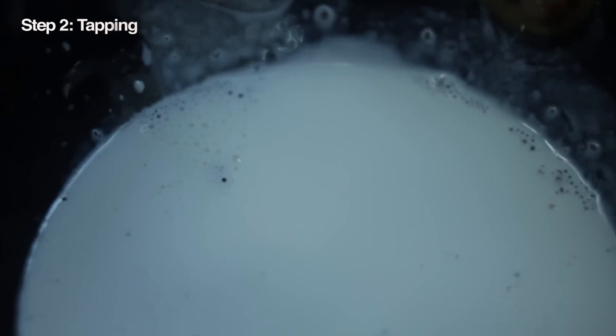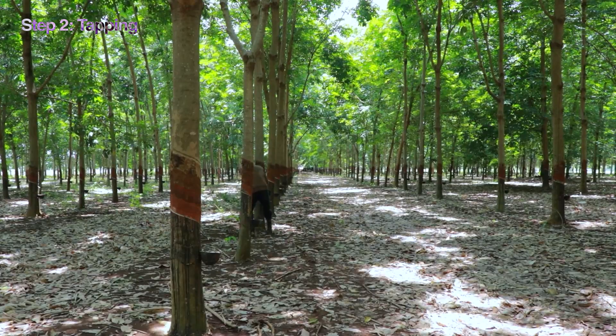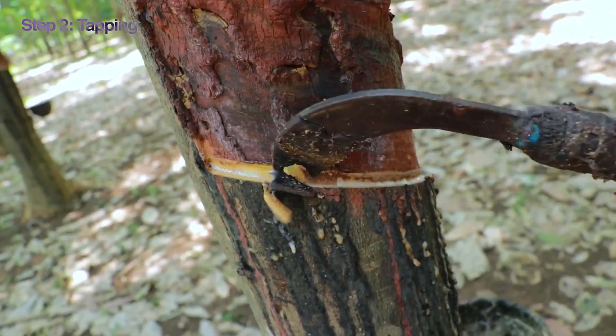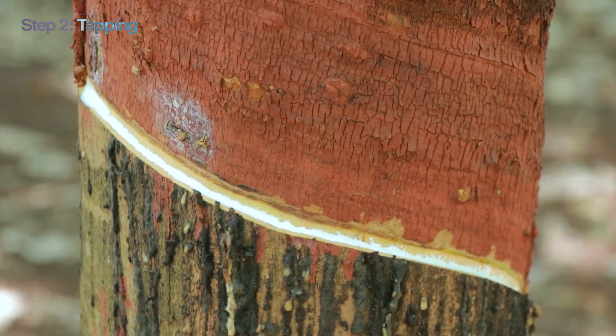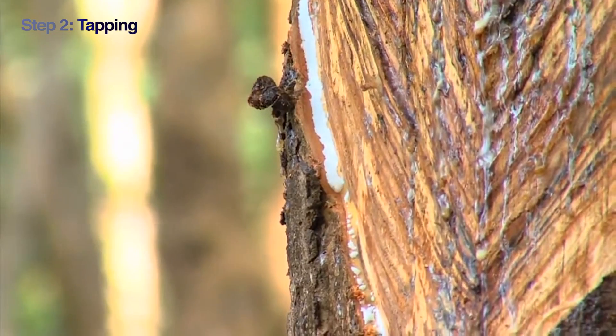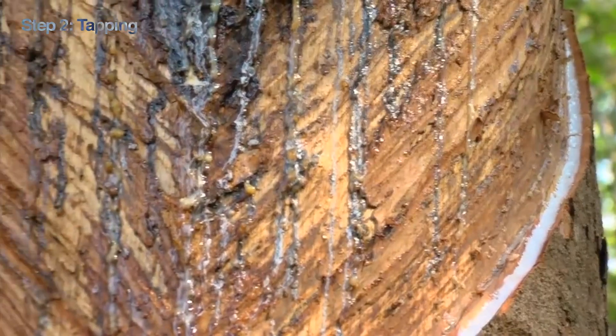This latex then travels down a specially designed channel cut alongside the initial slash, all the way to a spout at the bottom. It flows right into a waiting cup for collection. But this isn't a one-and-done deal. Every other day the tapper returns, wielding their special knife again. This time they make a thin shaving right below the previous cut, creating a ladder-like pattern on the tree.